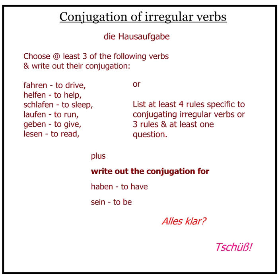Also, die Hausaufgaben. Choose at least three of the following verbs and write out their conjugation: fahren (to drive), helfen (to help), schlafen (to sleep), laufen (to run), geben (to give), lesen (to read). Or, list at least four rules specific to conjugation of irregular verbs, or three rules and at least one question. Plus, write out the conjugation for haben and sein — whether you choose the first or second option, you need to write out the conjugation for both. Alles klar? Viel Spaß! Tschüss!